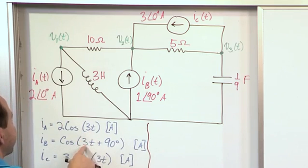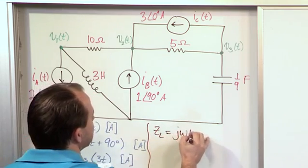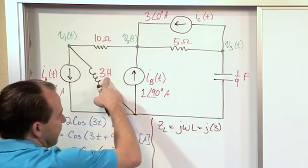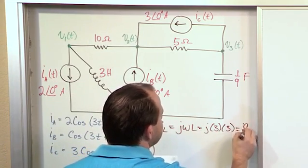So we know the frequency is three radians per second in each case. Let's go ahead and calculate the impedance for this inductor. It's J omega L, which is J times three, because the frequency is three, and L, which is also three Henrys. So what you get is J nine ohms.